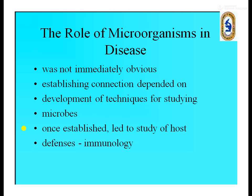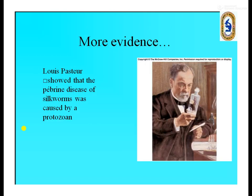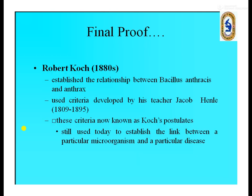These are not in your syllabus, so we are not going to study them in detail. Louis Pasteur showed that the pebrine disease of silkworm was caused by protozoa. Robert Koch established the relationship between Bacillus anthracis and anthrax — in simple terms, anthrax was caused by Bacillus anthracis. He used criteria developed by his teacher, Jacob Henle.